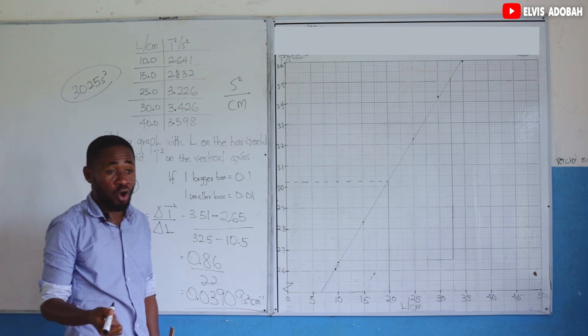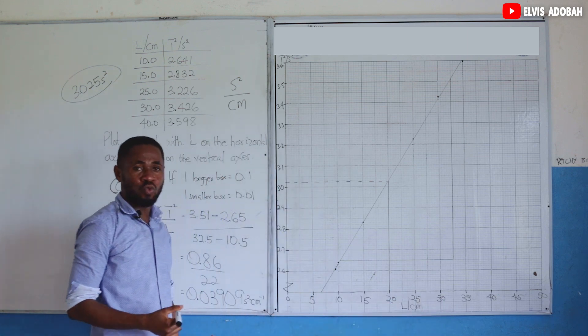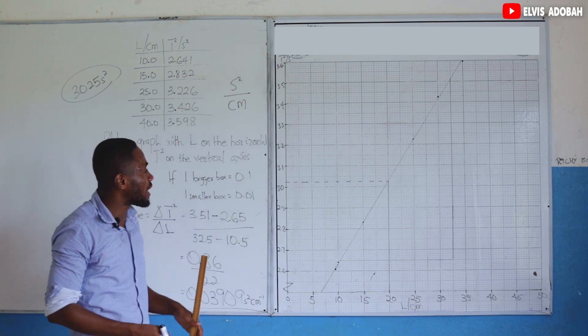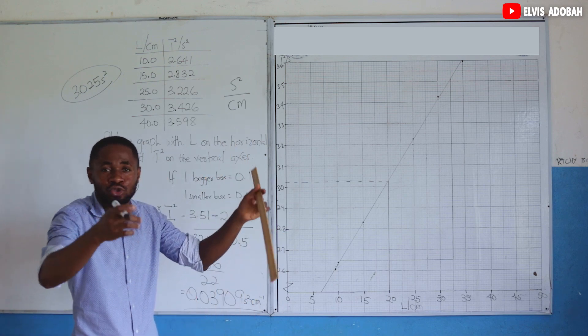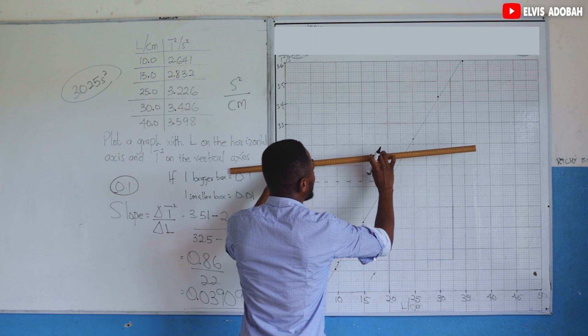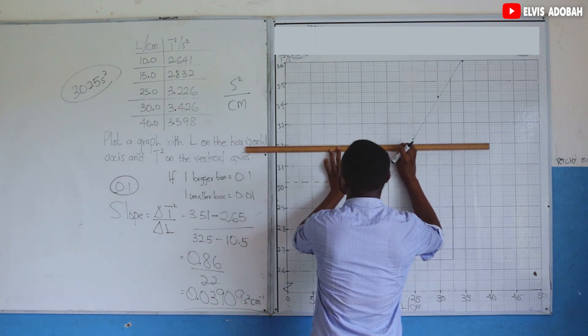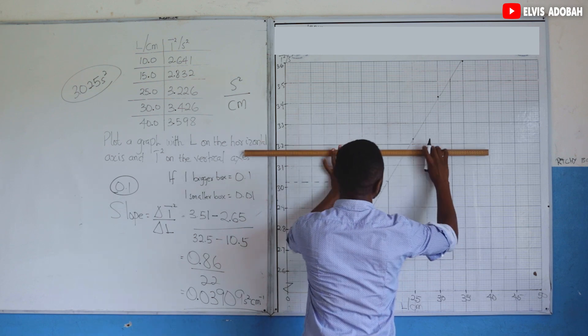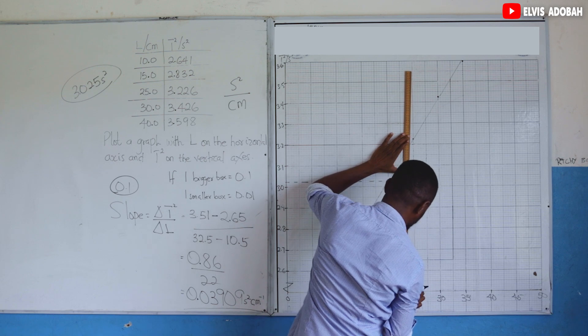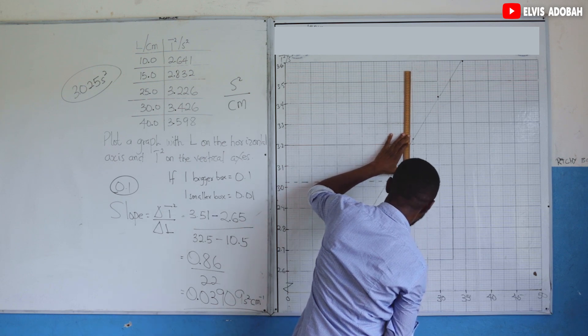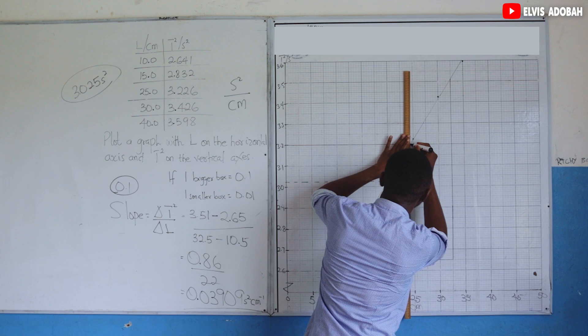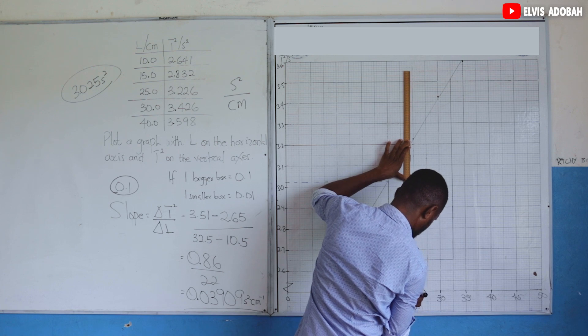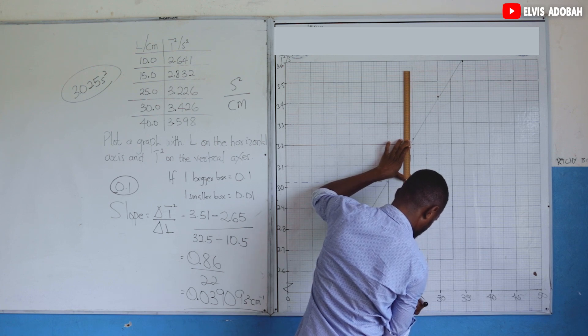They could also ask you for the value for L when capital T squared is equal to any number at all. For example, when capital T squared is equal to 3.2. So this is 3.2 on the capital T squared axis. You draw a line from that point to touch our straight line.